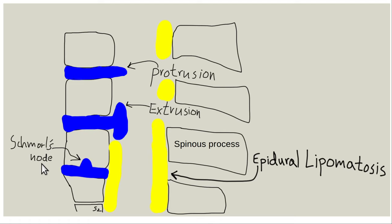There is fat in the spinal canal. This is the anterior epidural space and this is the posterior epidural space. The sac in which the cerebrospinal fluid sits is called the dura. Epidural means outside the dura. Some people — some overweight people — accumulate a lot of fat in the epidural space.